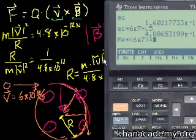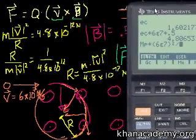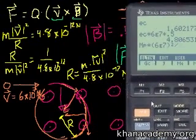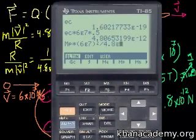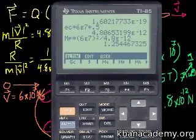And then all of that divided by the magnitude of the centripetal force, which is the force that's being generated by the magnetic field. That's 4.8 times 10 to the negative 12. So divided by 4.8e minus 12. Let's see. Hopefully we don't get something funky.